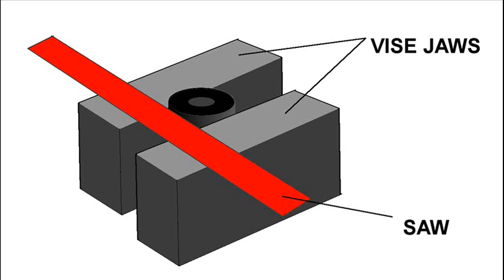Lay a hacksaw or other fine tooth saw blade flat on the vise jaws and gently saw off the top of the housing.